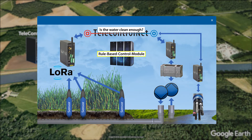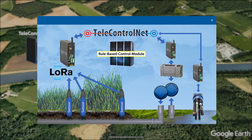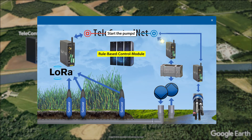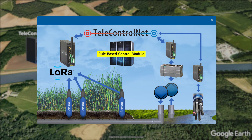The water quality sensor will be asked for data. The sensor will measure the water quality and send the data back. Now the rule-based control module decides what to do — finally, the pumps are switched on to feed the irrigation system.